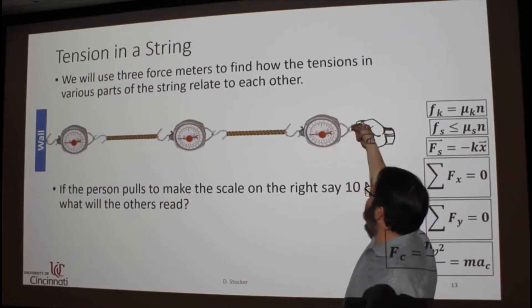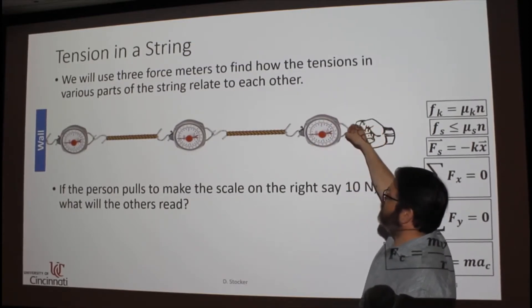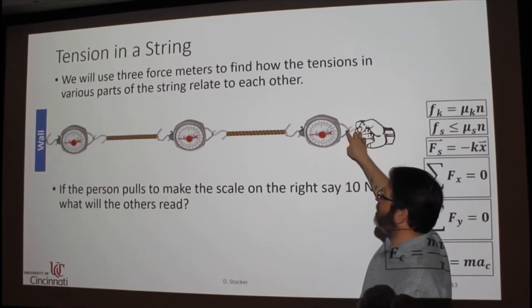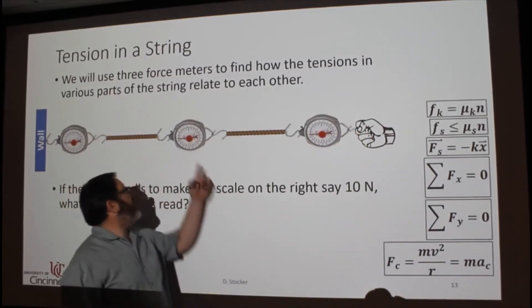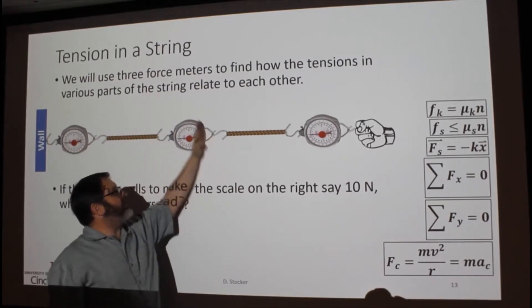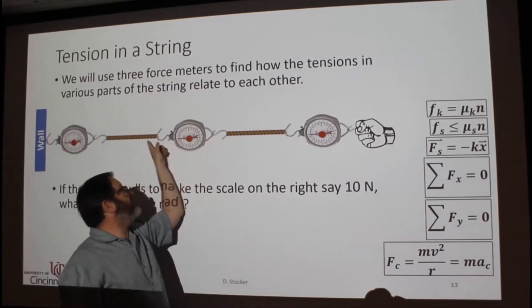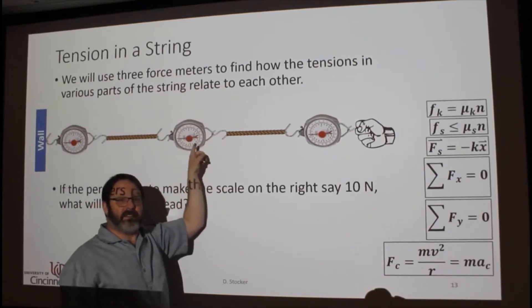Now this tells you the force of the spring pulling on the string here. This tells you the force that the string is pulling here on the wall. And then this one is kind of like a cut in the middle of the string. It tells you how much tension is in the string in the center.